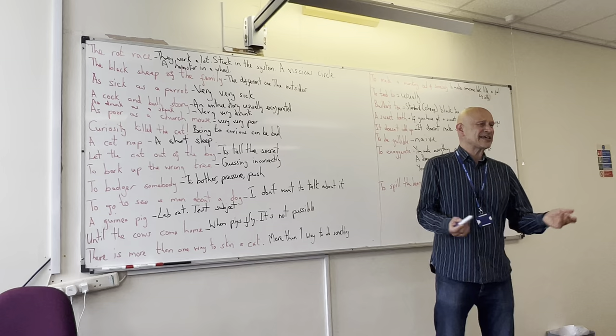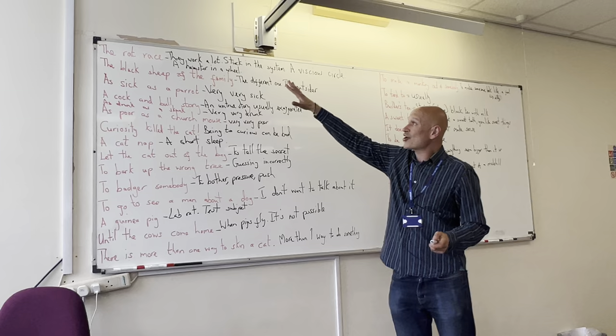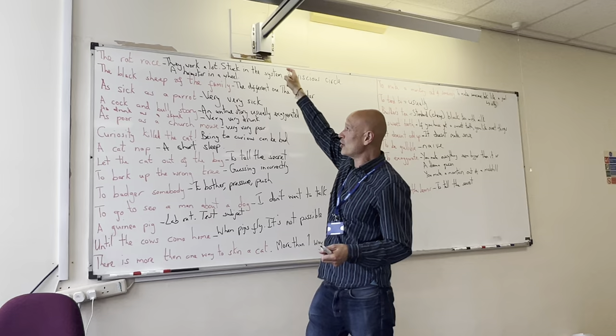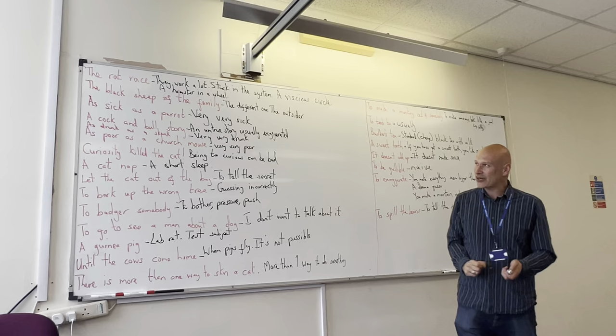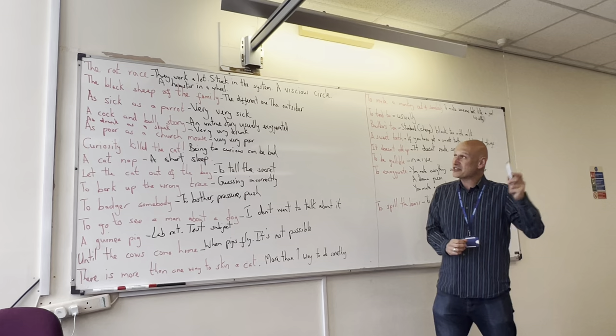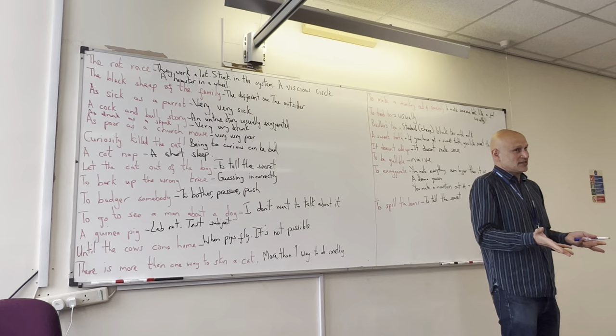If you're in the rat race, you work a lot. You're stuck in the system, a vicious circle. I'm sorry if I spelt that word wrong and then someone said a hamster in a wheel going round and round. I love it. The black sheep of the family, you have this idiom in your language. It's the different one, the outsider. I asked, is it positive or negative? But you said, it depends. And you're right, it does depend very much.